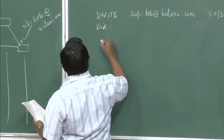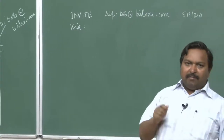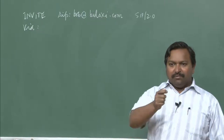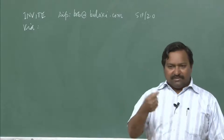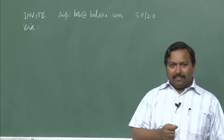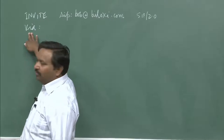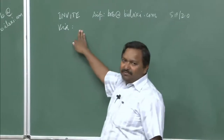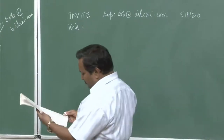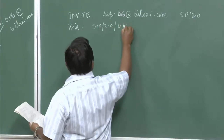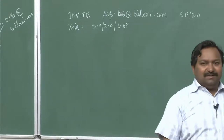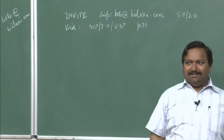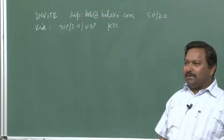There is a Via header field which tells, for this particular request, who is sending it and what route will be used. A request will have at least one response, but can have more than one response. When the return response comes, it is going to come via this — that is what it means. It gives a complete transport and the SIP version. The user is actually sending the invite through this particular client, so the response should come back to this particular client.